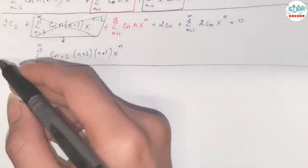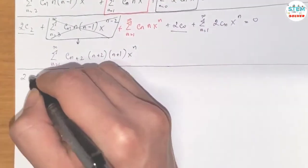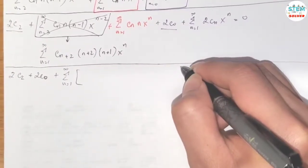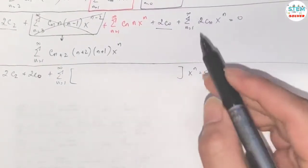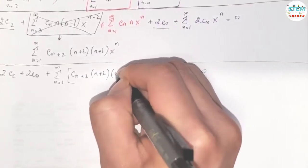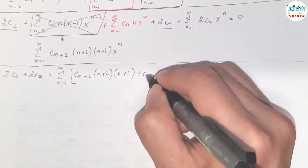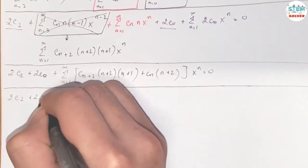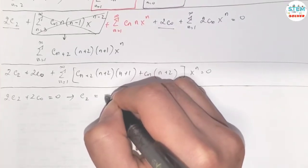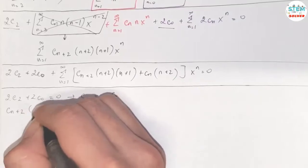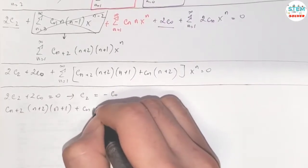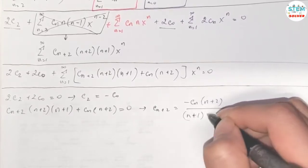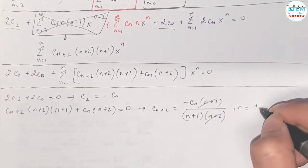Now we combine like terms. Looking at the constants, we have 2c_2 and 2c_0. So: 2c_2 plus 2c_0, plus the power series from 1 to infinity, factoring out x to the n, we have c_{n+2}(n+2)(n+1) plus n·c_n plus 2c_n, equals 0. Equating coefficients: let 2c_2 plus 2c_0 equal 0, then solving for c_2 gives c_2 equals negative c_0. Setting the bracket equal to zero and solving for c_{n+2} gives the recurrence relation: c_{n+2} equals negative c_n over (n+1)(n+2), for n from 1 to infinity.